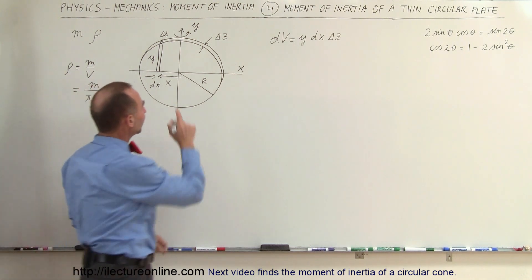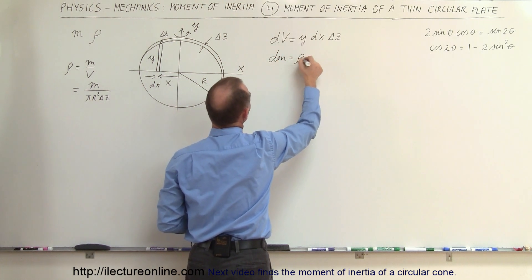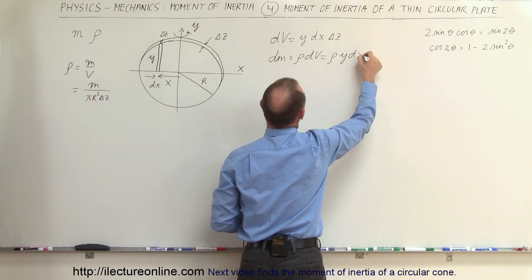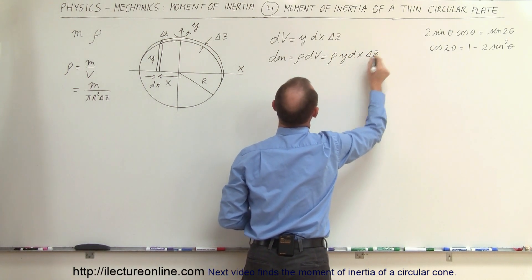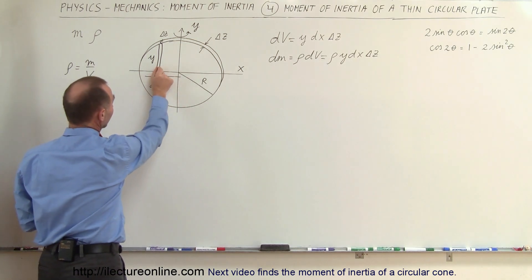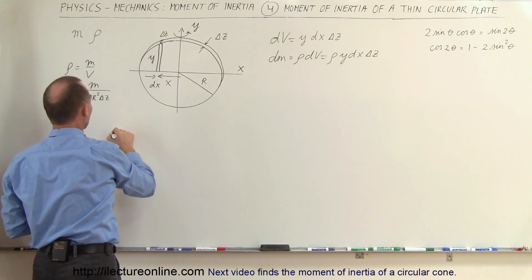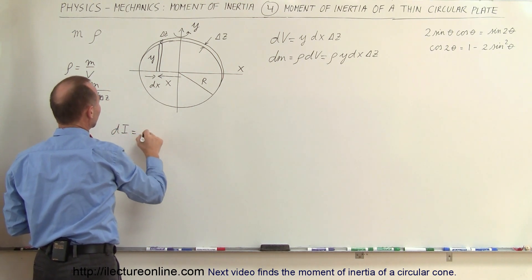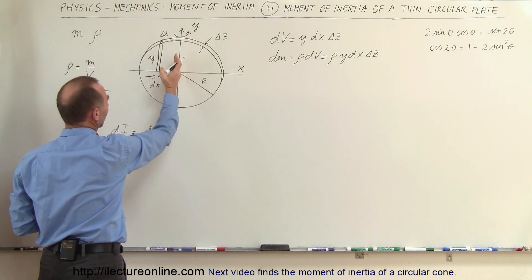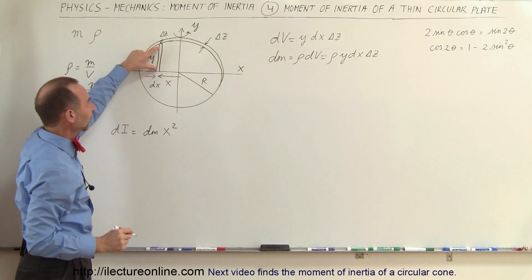The mass of that small little segment, let's call it dm, is equal to the density times dV, which equals the density times y times dx times delta z. We'll need that because the moment of inertia of this little segment as it goes around the y-axis, by definition dI, is equal to the mass dm times the distance to the axis of rotation squared, which is x squared.